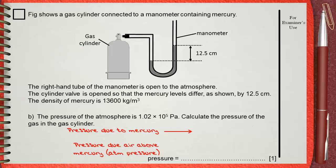So pressure due to mercury is 17,000 Pascals from the previous question. Pressure due to air as mentioned in this question which is 1.02 times 10 power 5 Pascals.